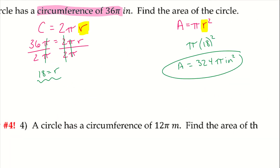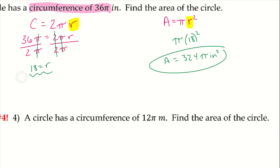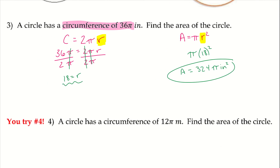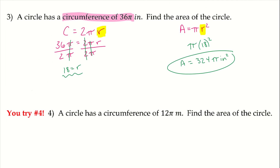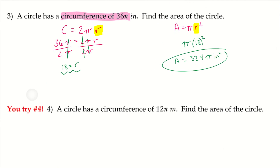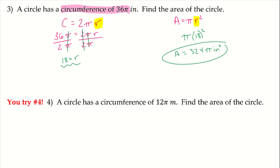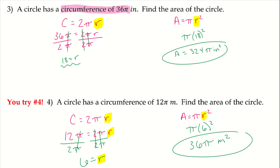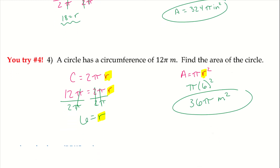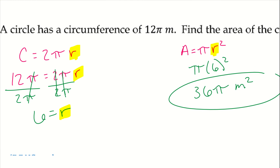Go ahead and try number 4 — it's the exact same process we just did with number 3, so you can use that as a reference. We just have a different number; we're using 12 instead of 36. Pause the video and give it a try. Use the circumference to find the radius, then plug it in to find the area.